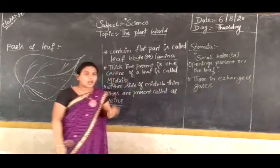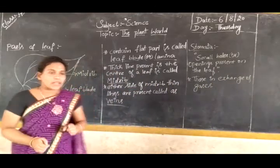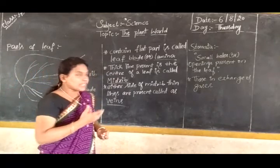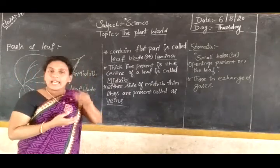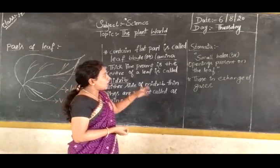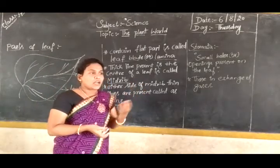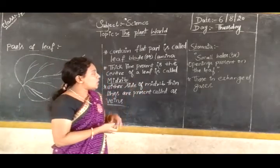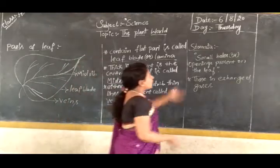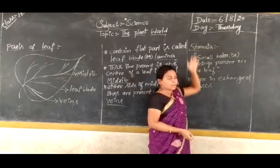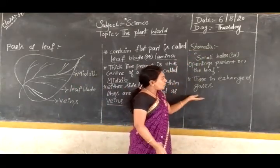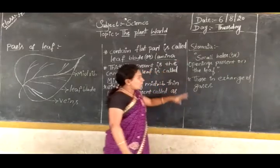The stomata help in the exchange of gases in plants. This is the function of stomata. In humans, with the help of our nostrils we take in gas and also release gas. Similarly, plants also take in carbon dioxide and release oxygen to the atmosphere with the help of stomata.